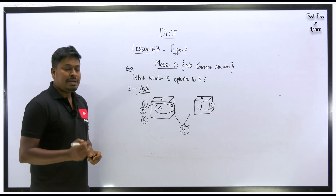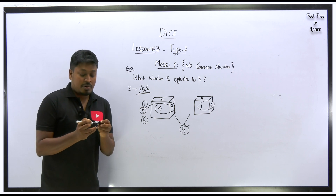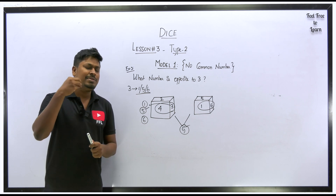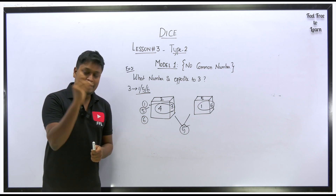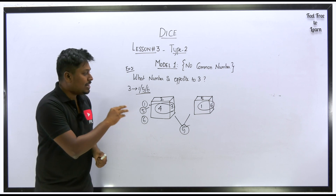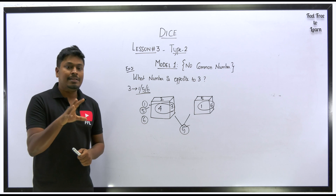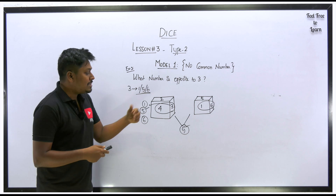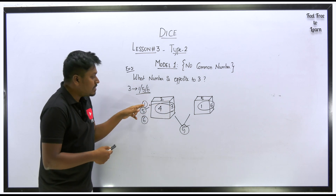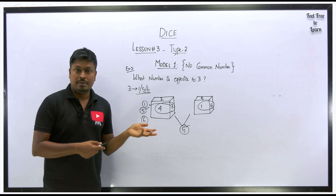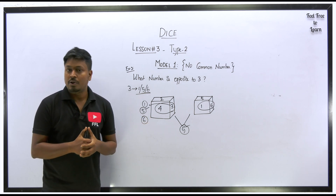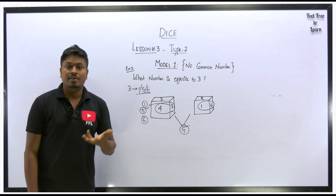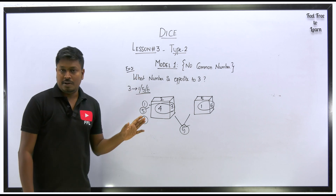To summarize Model 1: if no number is common in both diagrams, do not use any shortcut. Just check whether it is a standard dice or a general dice. If it is a standard dice, finding the answer is easy because opposite faces total 7. For a general dice you cannot say exactly which number is opposite to which, so multiple answers are possible.